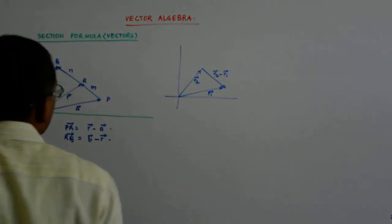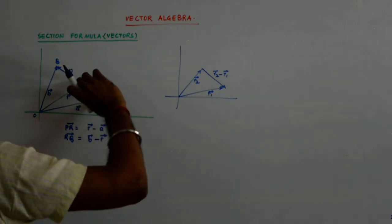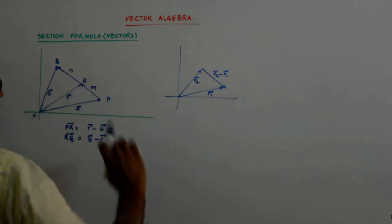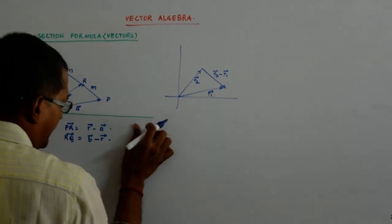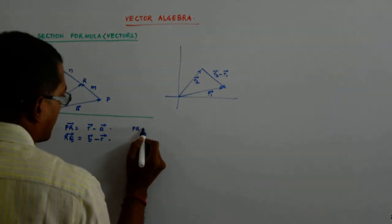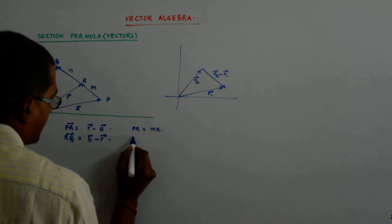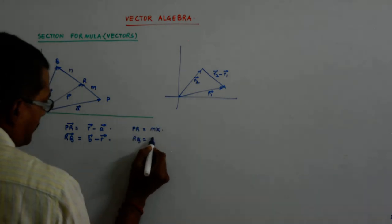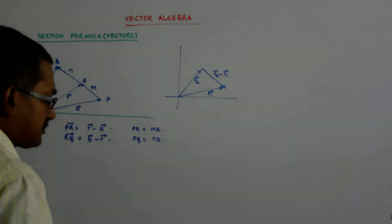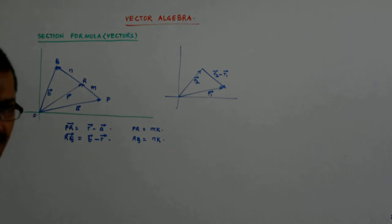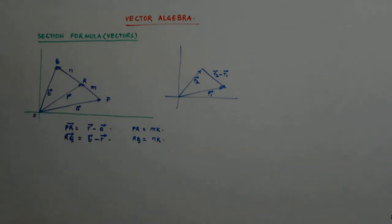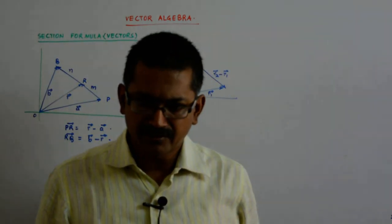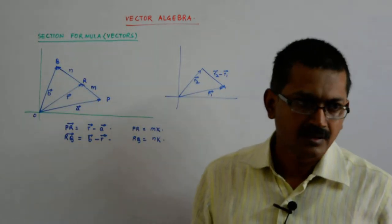Now, you will find one thing, what is the ratio of the length of these? I mean, I need to ask, what is PR? PR is equal to mk and RQ is equal to nk, is it not? So now what happens? See after all they are collinear vectors, right? They are collinear vectors and they are parallel vectors, correct?